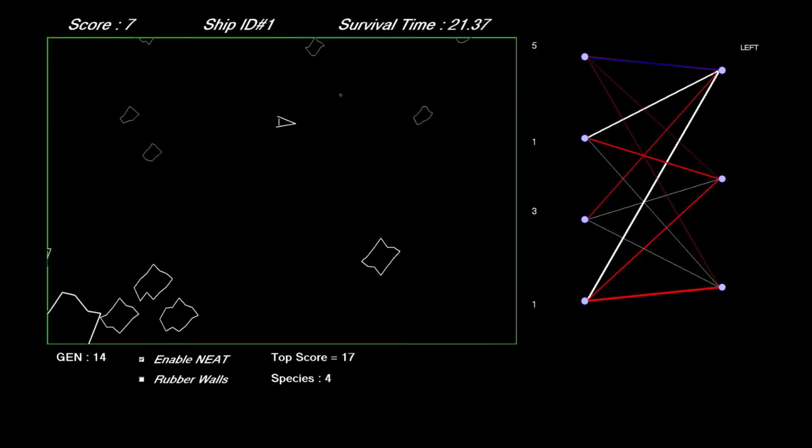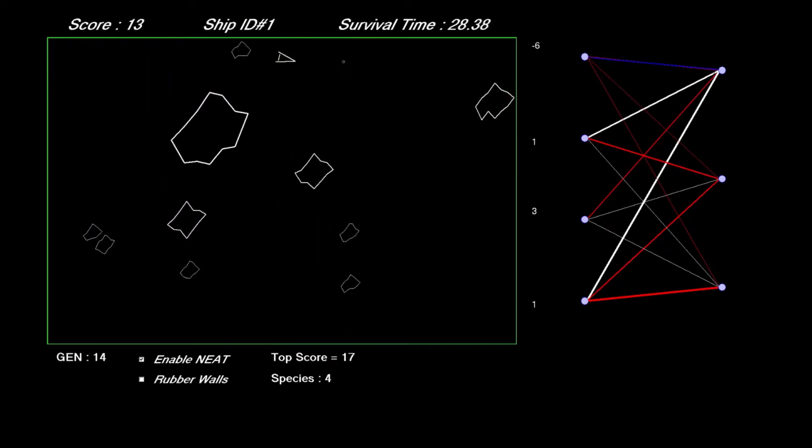The inputs remain the same as before. Node 1 and 2 are the direction and distance to the nearest asteroid. Node 3 is the direction the ship is pointing and Node 4 is a bias node.